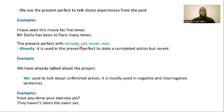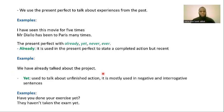The present perfect is also used with 'already,' 'yet,' 'never,' and 'ever.' 'Already' is used to state a completed but recent action. For example: 'We have already talked about the project.' Imagine a meeting was at 10 and someone arrived late at 12 — you would say, 'We have already talked about the project.' The action is in the past, but a recent past.